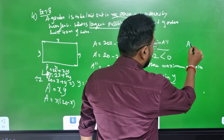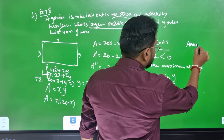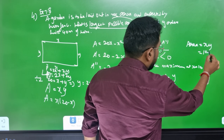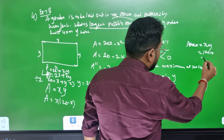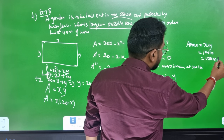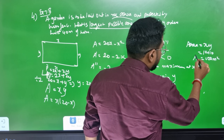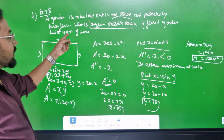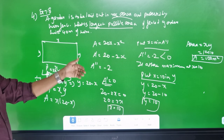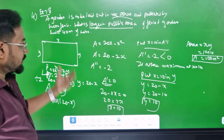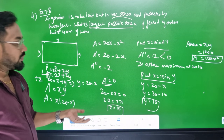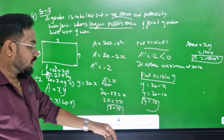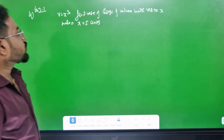Set A single dash equal to 0: 20 minus 2x equals 0, so 20 equals 2x, x equals 10. x is the critical point — maximum. x equals 10, y equals 20 minus 10 equals 10. Area equals x into y equals 10 times 10 equals 100 square meters. The value is equal to 5 and 7.8.